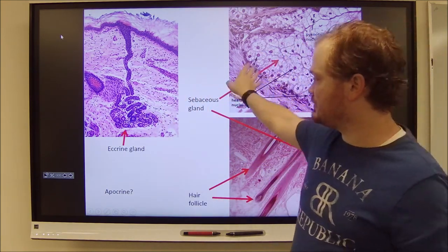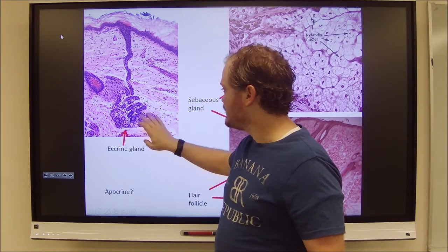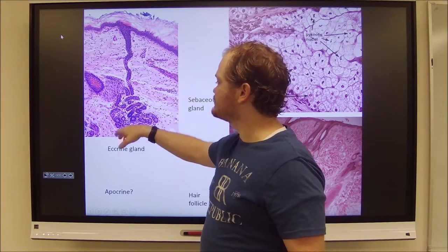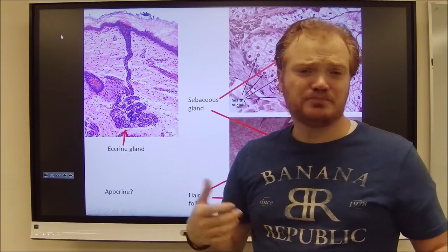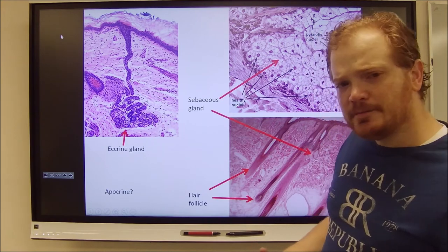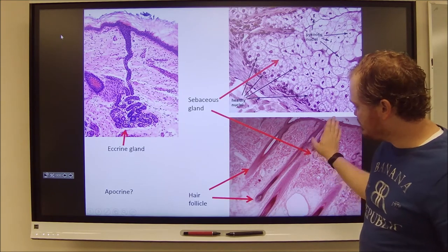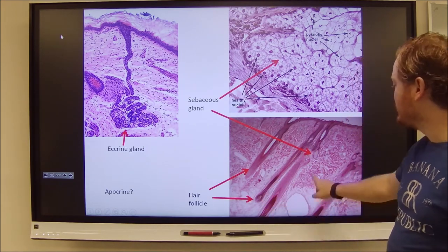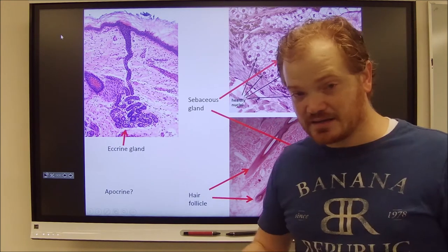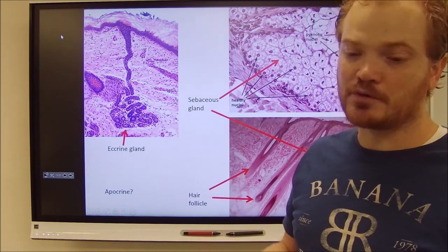Eccrine glands form little tubes — all these little circles — and you can see the tube meandering through the surface of the skin. That's a good old-fashioned eccrine gland, producing sweat. Then there are sebaceous glands, which look very fatty and oily, and they will always be attached to hair follicles. They release oils onto the surface of the skin via the hair follicle to keep the skin waterproof and moisturized.